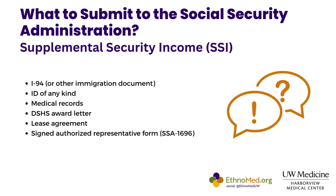The first couple of documents are basic identification documents: an I-94 or birth certificate if possible, and an ID of any kind — this can include the employment authorization ID if your client has that. Medical records — if it's an in-person interview, SSA might be interested in making copies of some of those records, especially if you haven't filled out that online disability application. And then things like a DSHS award letter if your client is receiving cash or food benefits.